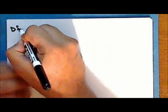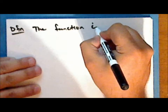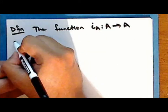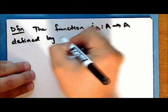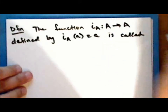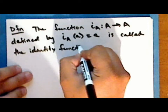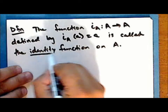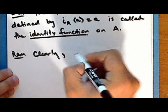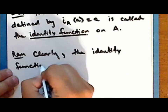New definition: the function denoted with a lowercase letter i and the subscript A, from the set A back into the set A, defined by iₐ(a) = a, is called the identity function on the set A. Notice that the identity function is a bijection.